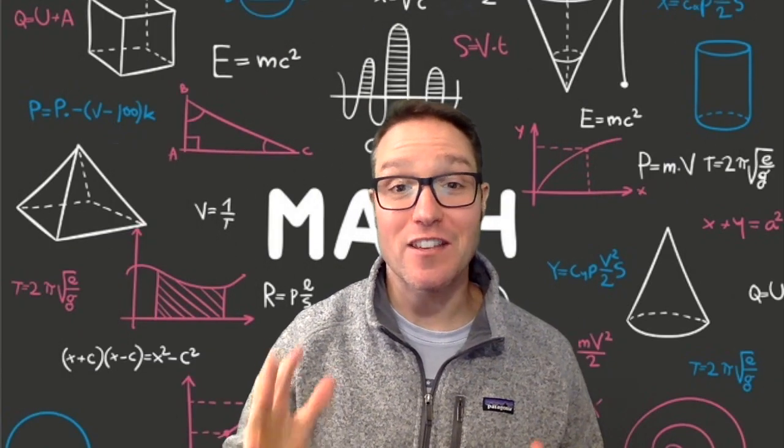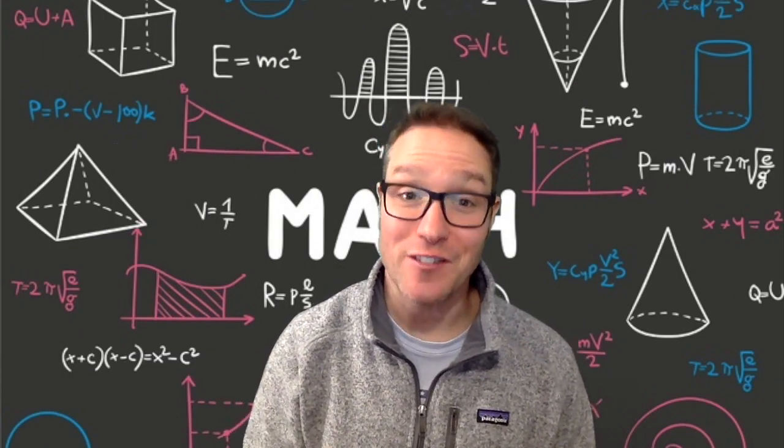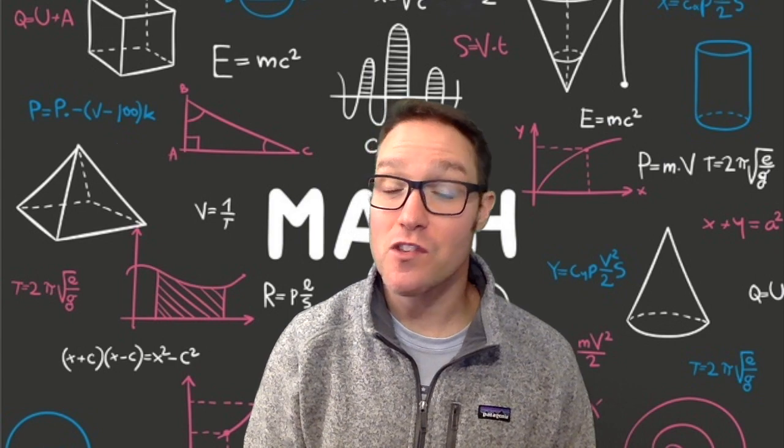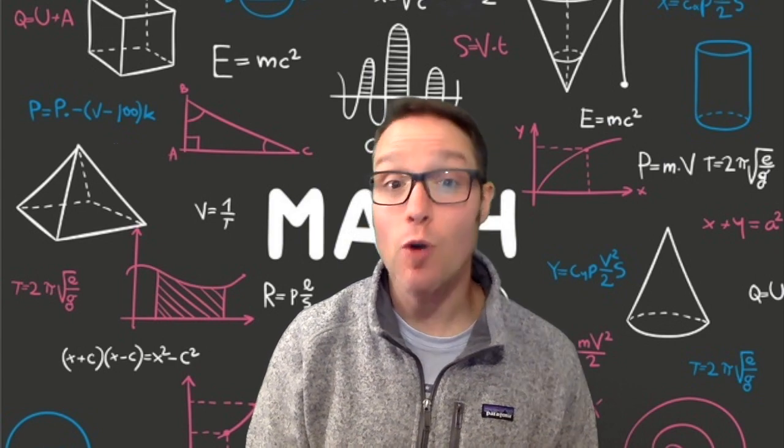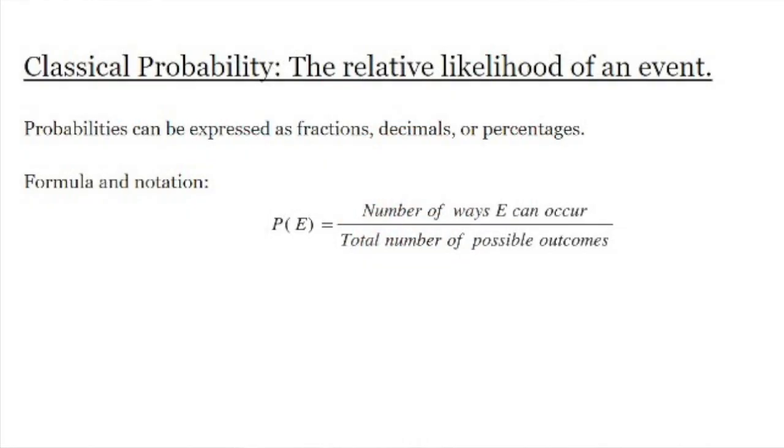Classical probability is the relative likelihood of an event. Probabilities can be expressed as fractions, decimals, or percentages. Here's a formula and some notation. The probability of an event E is the number of ways the event can occur divided by the total number of possible outcomes, also known as the sample space.